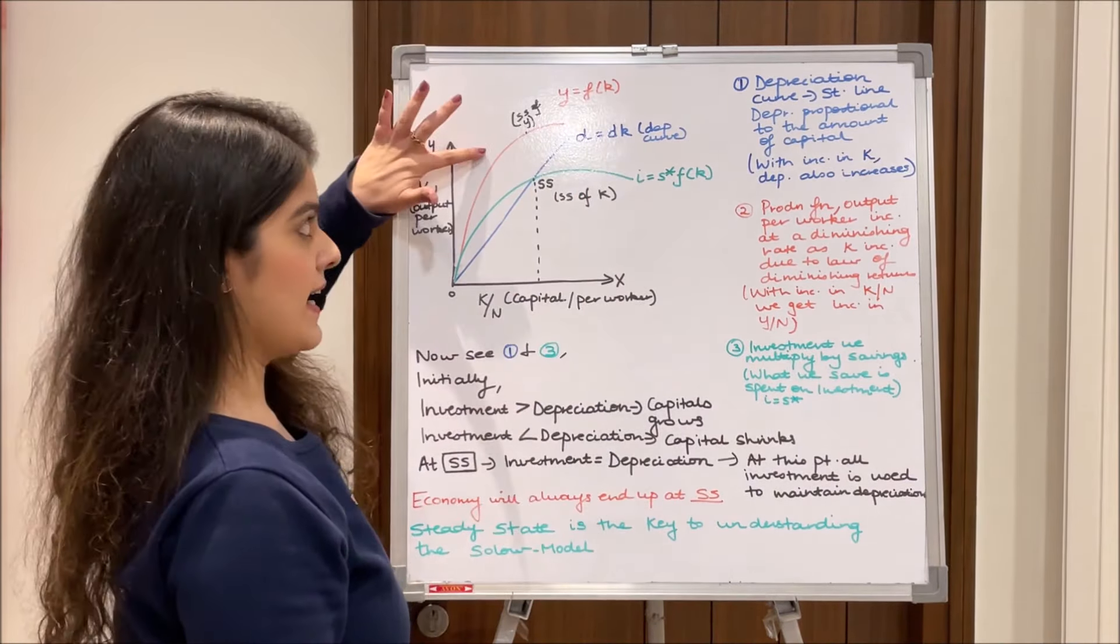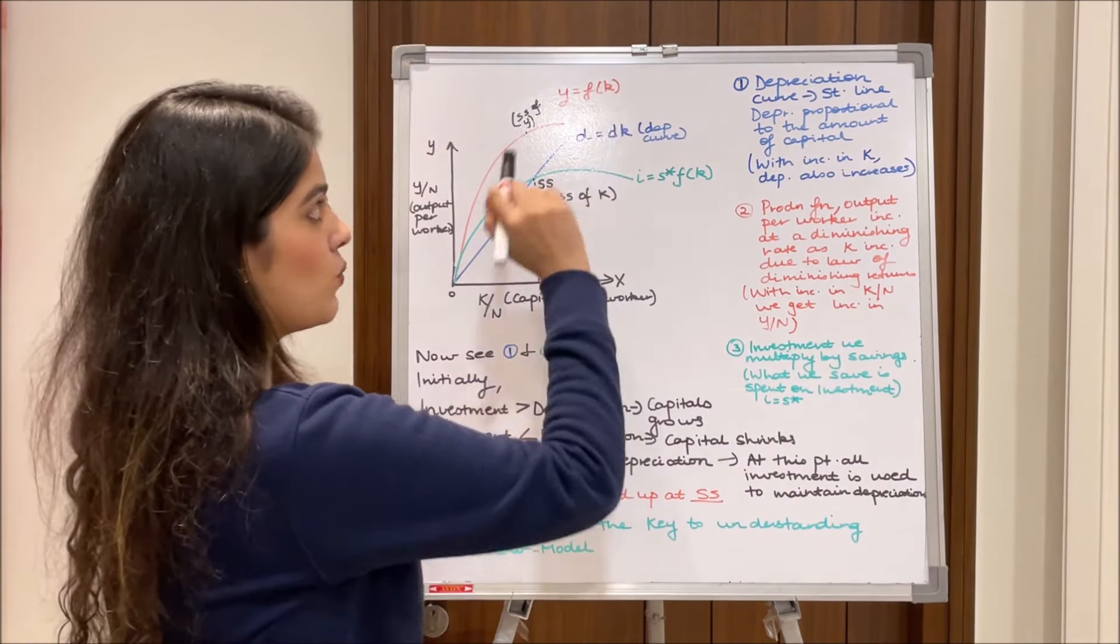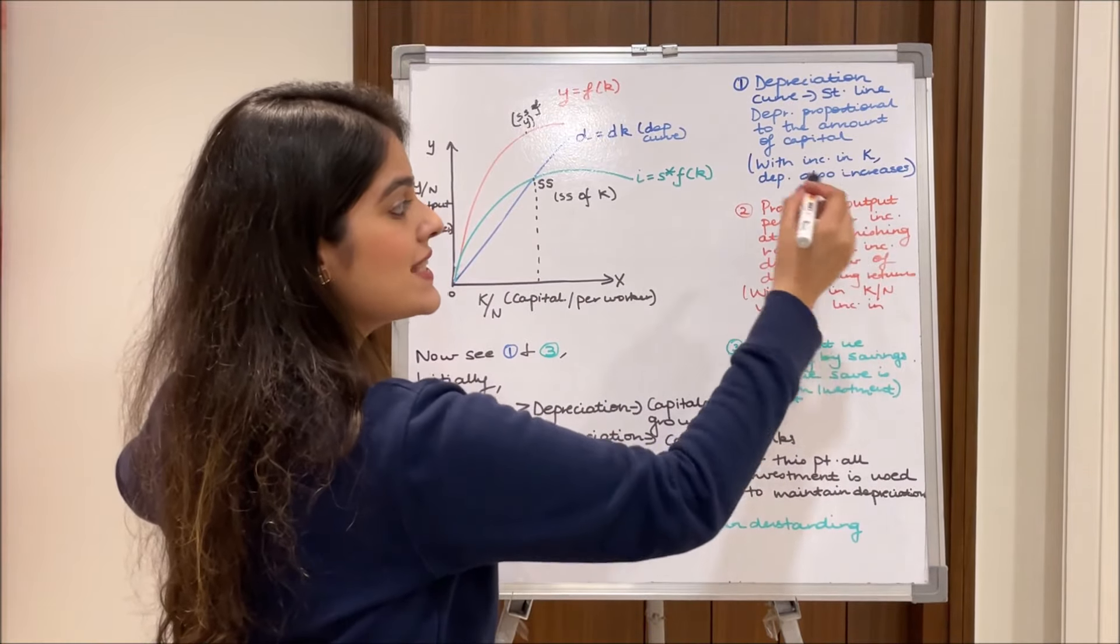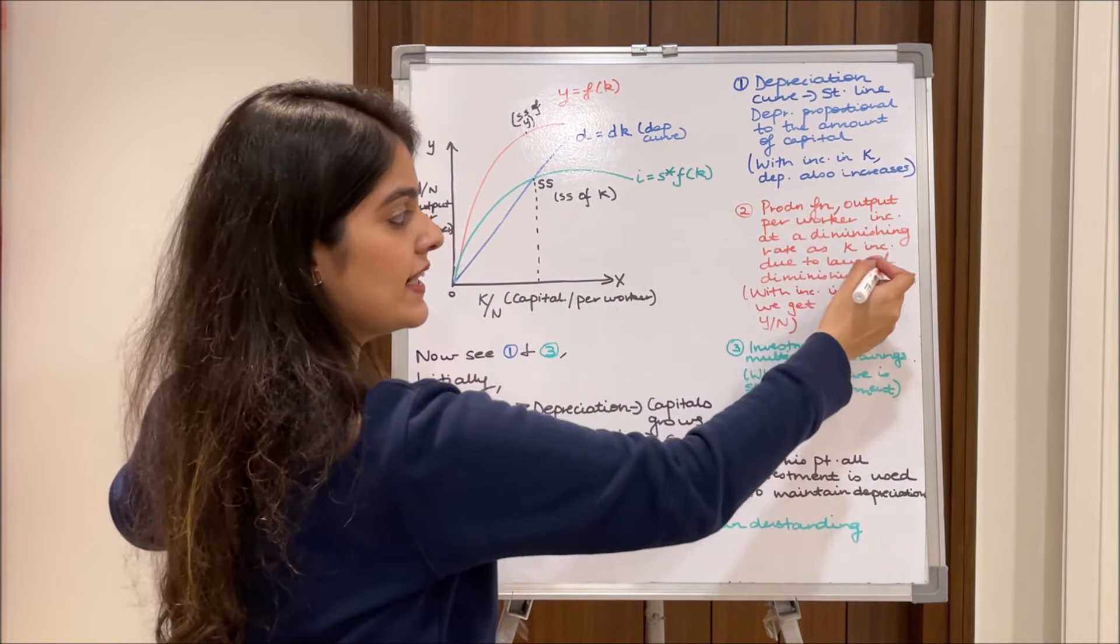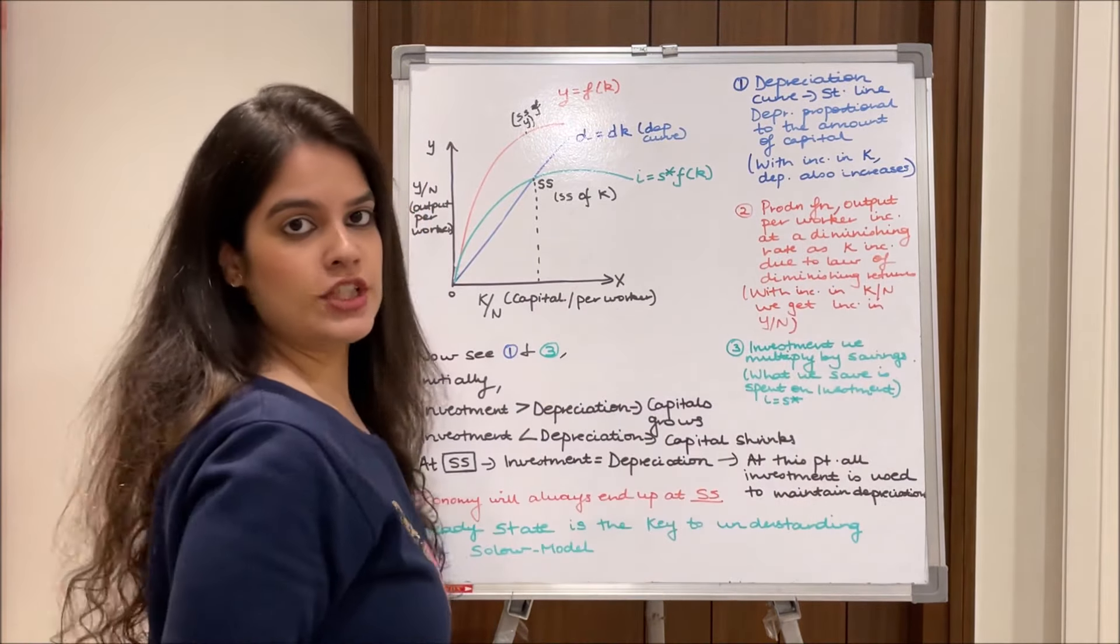Moving ahead to the red line which is our production function. Here I've labeled it as y equals f(k). Here we see output per worker is increasing at a diminishing rate as capital is increasing due to the law of diminishing returns.